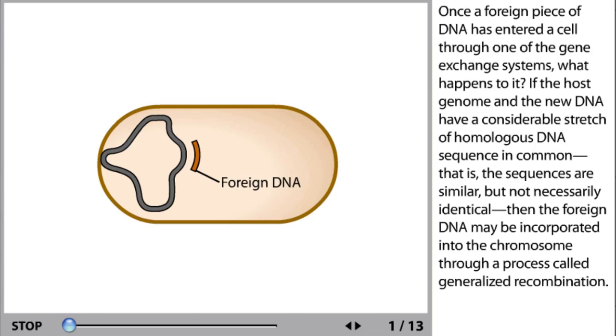Once a foreign piece of DNA has entered a cell through one of the gene exchange systems, what happens to it? If the host genome and the new DNA have a considerable stretch of homologous DNA sequence in common—that is, the sequences are similar but not necessarily identical—then the foreign DNA may be incorporated into the chromosome through a process called generalized recombination.